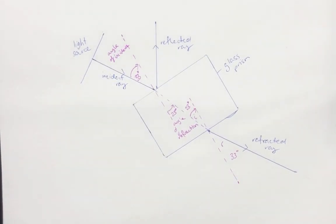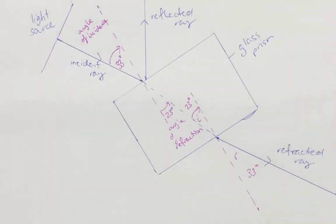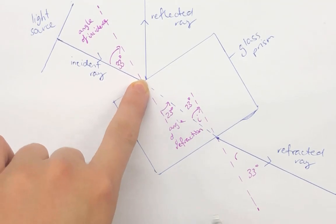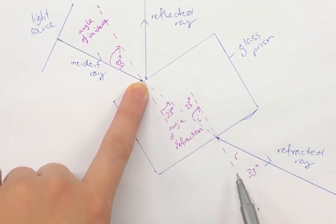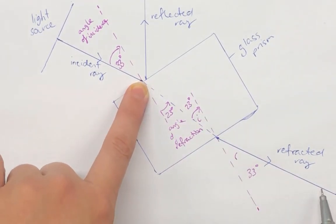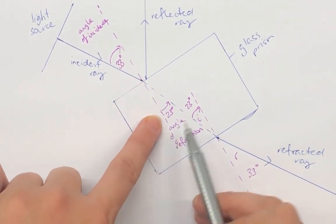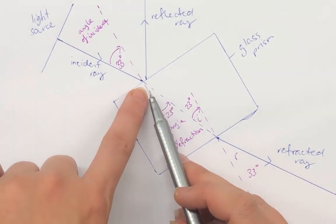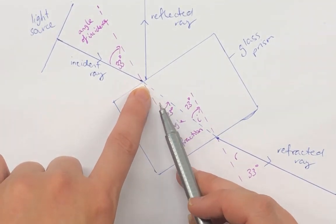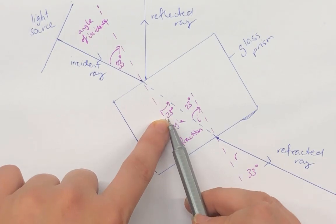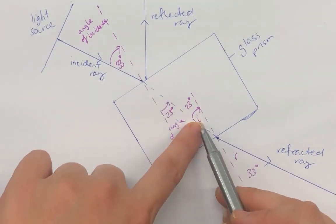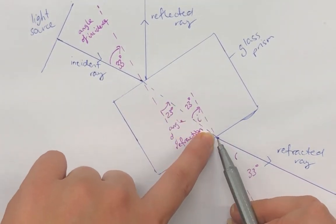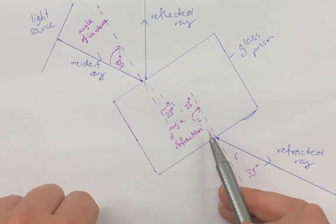Now hopefully you can see the relationship between these different angles. The angle of incidence as the light is coming in to hit the medium is equivalent to the angle of refraction as the light leaves the medium. Likewise, the angle of refraction as the light passes through the glass prism, 23 degrees, and the angle of incidence as it's on its way out of the medium is 23 degrees.